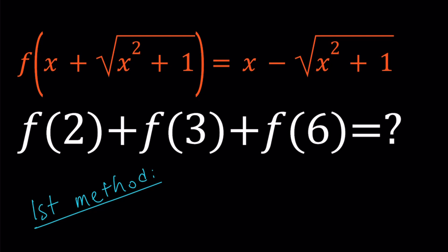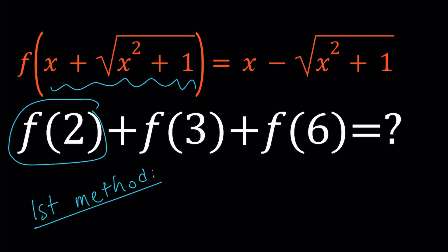For my first method, I'm going to use a direct approach. If I'm trying to evaluate f of 2, I need to make the argument equal to 2. So I'm going to set the value inside the parentheses equal to 2, 3, and 6 successively. Each time I'm going to find an x value, plug that into the right-hand side, and that's going to give me the answer.